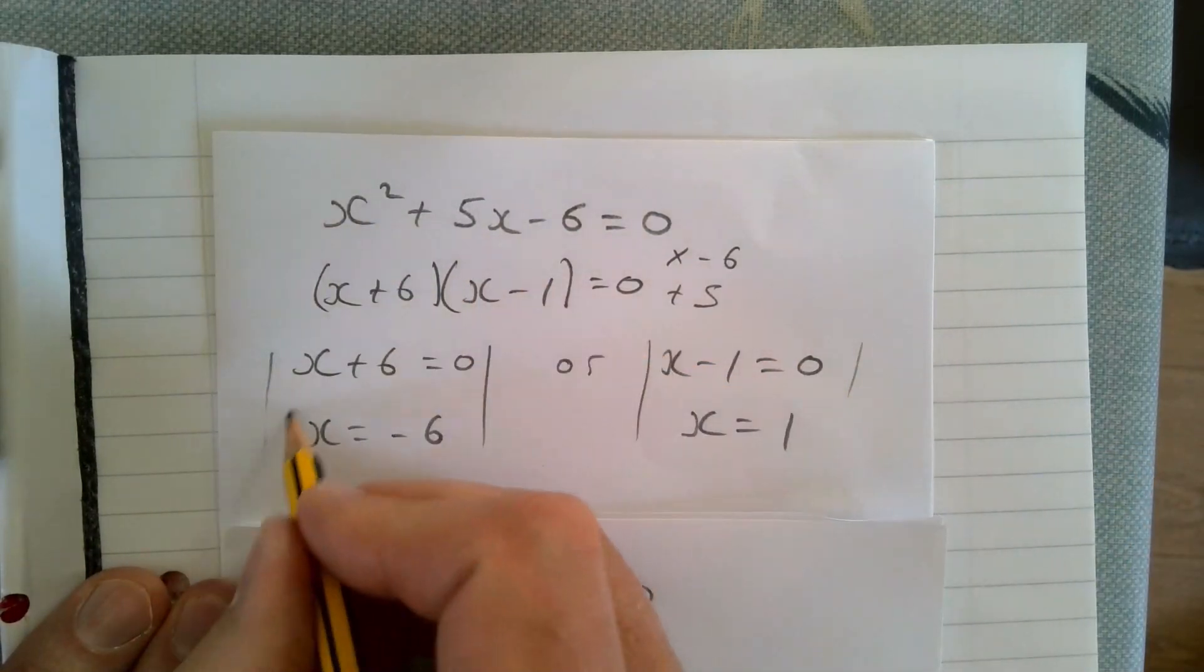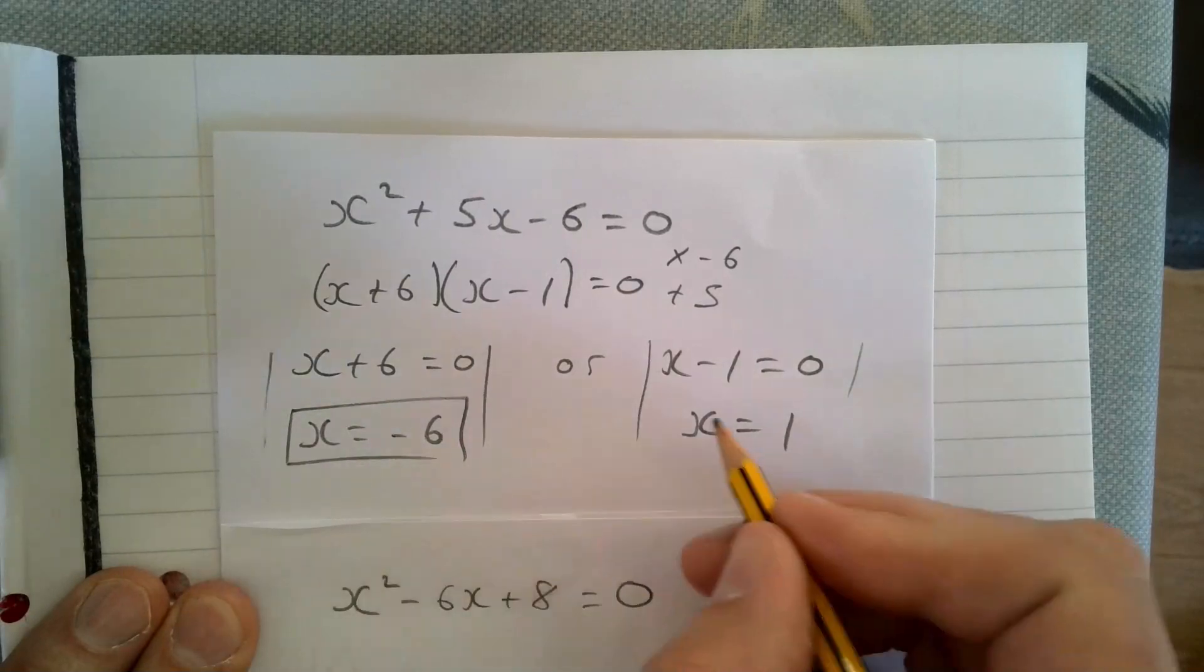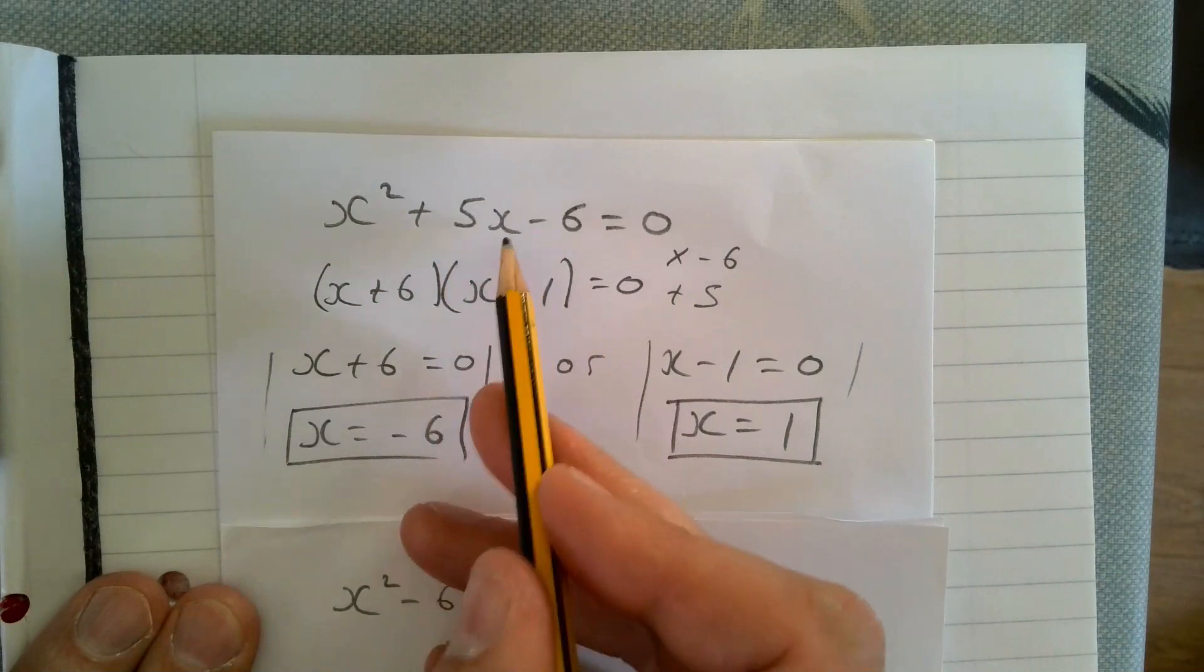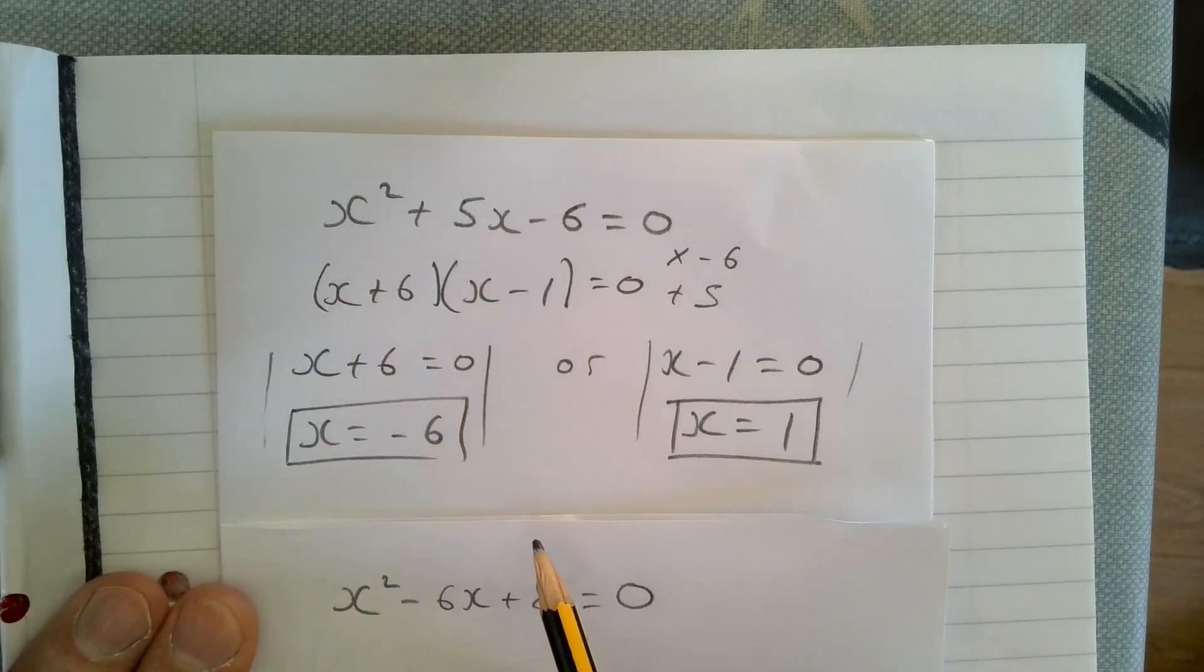Add one to both sides gives us x equals one. So the two solutions for this quadratic equation are x equals minus six and x equals one. If you substitute those numbers into this equation, those are the only two numbers that will work.